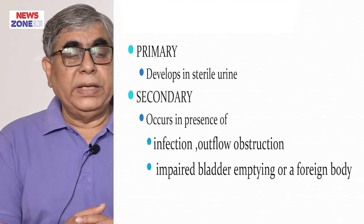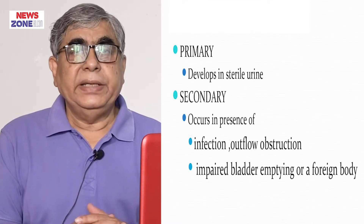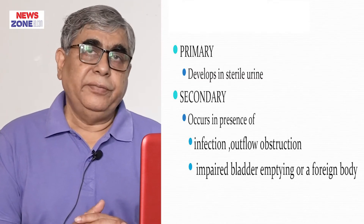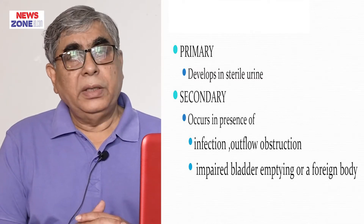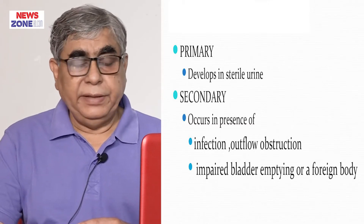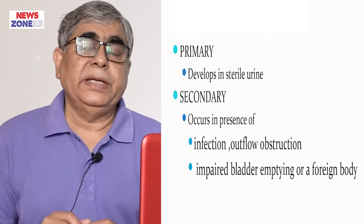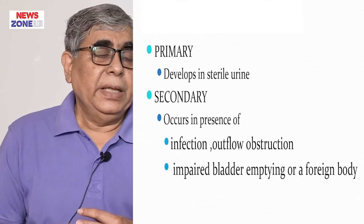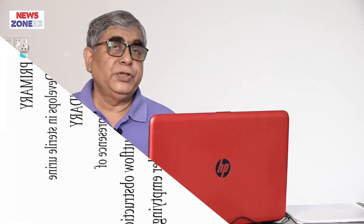Vesicle calculi may be primary, developing in sterile urine, or secondary, occurring in the presence of infection, outflow obstruction, impaired bladder emptying, or a foreign body inside the bladder. A patient with a long-term indwelling catheter, or one who has developed paraplegia or spinal cord injury — where the normal micturition reflex has been lost — is also at risk, as constant foreign body presence predisposes to stone formation.